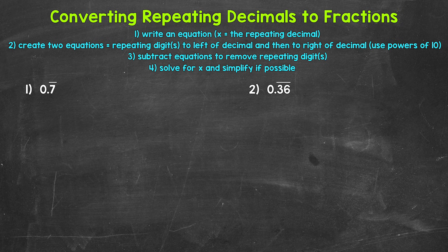The steps that we're going to use will seem confusing, long, and overwhelming at first. But after some examples and practice, this process will become much faster and simpler to work through. Let's jump into number one, where we have 0.7 repeating.